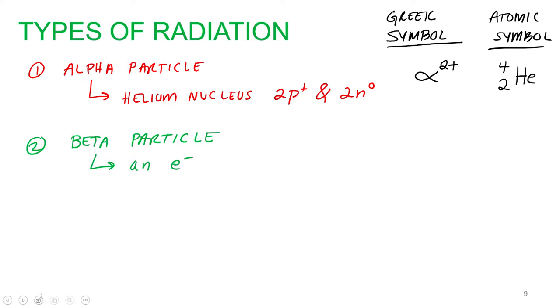And so my symbols for this are, the Greek letter is a beta, with a negative. And my atomic symbol is an electron. Now, an electron is not a proton or a neutron, so how are we going to do this? Just to keep, for balancing purposes, what we do is the mass number is zero, no protons, no neutrons, but we do give it an atomic number of minus one.